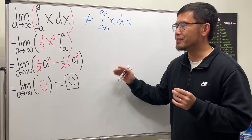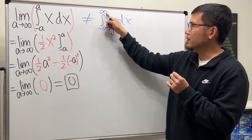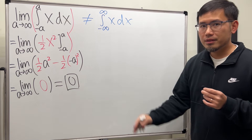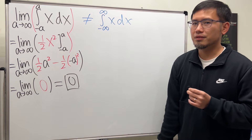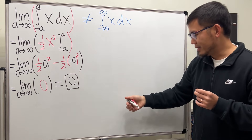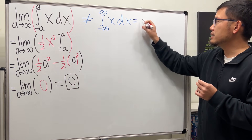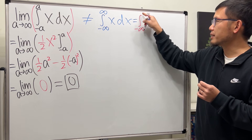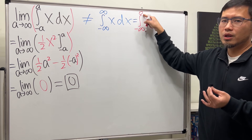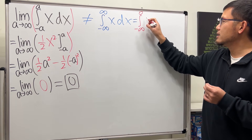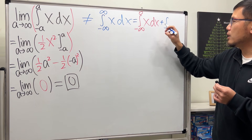Now, what if the question is written as the integral going from negative infinity to infinity of x dx? This is an improper integral with two trouble places: negative infinity and positive infinity. We cannot handle both at the same time, so we separate them — rewriting as the integral from negative infinity to zero, plus the integral from zero to infinity.